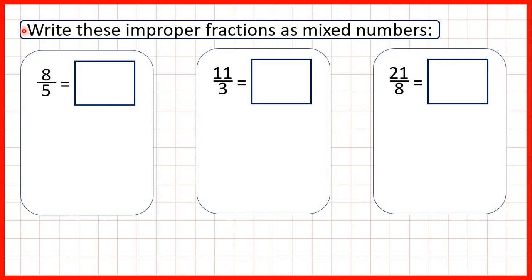Now we need to write these improper fractions as mixed numbers. Remember, an improper fraction is a fraction with a larger numerator than denominator — so here we have 8 over 5, or 8 fifths. A mixed number is a whole number and a fraction.